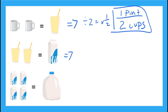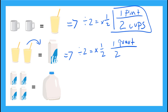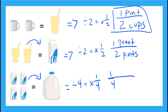For this picture, if I'm going from pints to quarts, I divide by two, and that's the same as multiplying by one half. But that one half is actually saying one quart is equal to two pints. And now for quarts to gallons, I have to divide by four, which is the same as multiplying by one fourth. And that one fourth actually means one gallon is equal to four quarts.